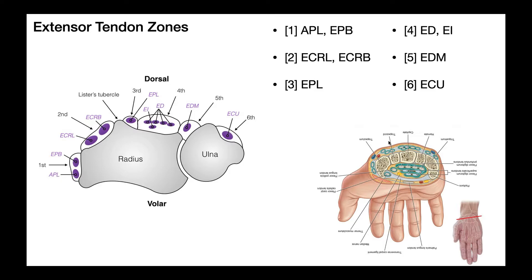Looking at this cross section, this is a little bit more distal to where the other cross section is taken because here we see the radius and the ulna, but the regions are going to be the same. There are six extensor tendon zones. Zone one over here is closest to the thumb side — you can see these two tendons right here. Those two are going to be lateral to the radius, but as they go distally they'll cross lateral to the trapezium. Closer to the ulnar side, we see one tendon — this is the sixth extensor tendon zone, which proximally goes over the ulna and distally passes dorsal-medially to the triquetrum bone. So let's start at the first extensor zone and work our way medially to the sixth over here at the pinky side.